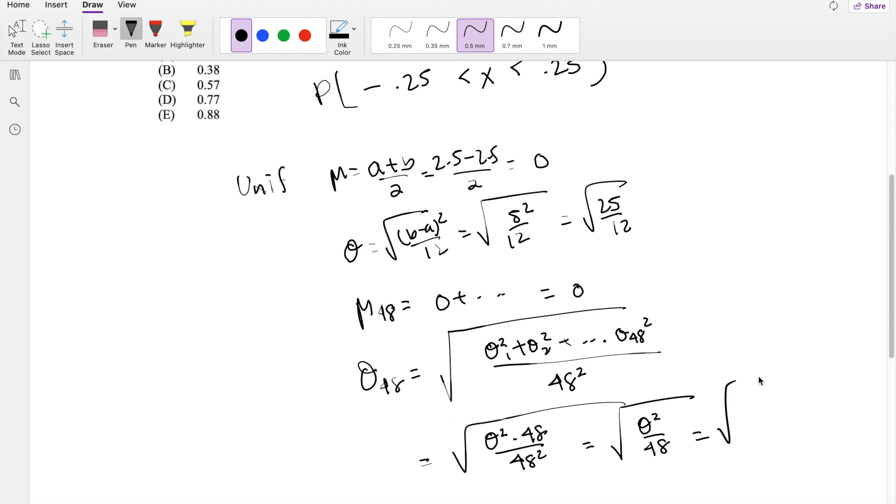So this is equal to the square root of variance over 48. We know the variance is 25 over 12, divided by 48, which is approximately equal to 0.2083.